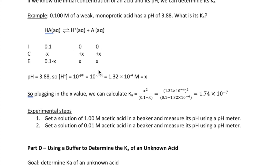Since we know pH, we can determine X, or H-plus concentration, by taking 10 to the power of negative pH, which gives us 1.32 times 10 to the minus 4 molar as our concentration of H-plus, or X. Plugging this into our Ka expression, we get Ka that's equal to 1.74 times 10 to the minus 7.